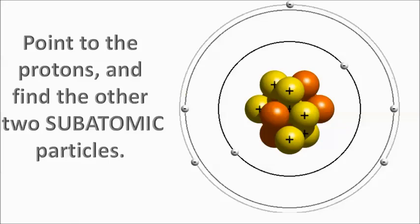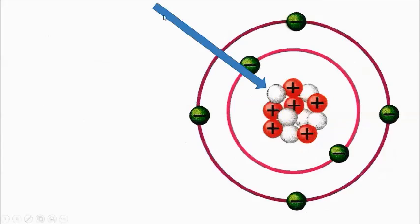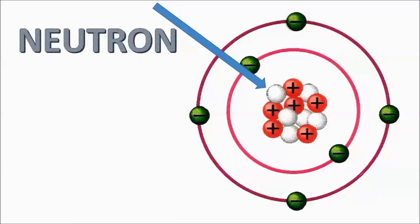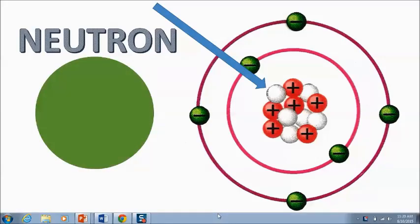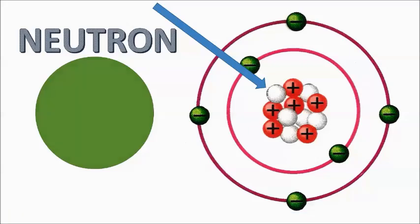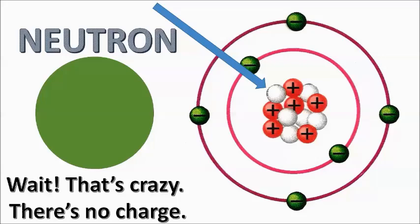The next subatomic particle hangs out with the proton — he's the neutron. He's super chill. You say, 'Hey Mr. Neutron, want to go for a hike?' And he says, 'Nah, man, I'm chill.' He's not upset, and he's certainly not excited. This is your friend that is always up to watch a movie or play video games, but isn't really excited about either. The neutron is also really massive, just like the proton. He doesn't make the atom more positive or more negative — he just makes it bigger because he's so massive. Inside the neutron, there is no charge. We're going to call this neutral.